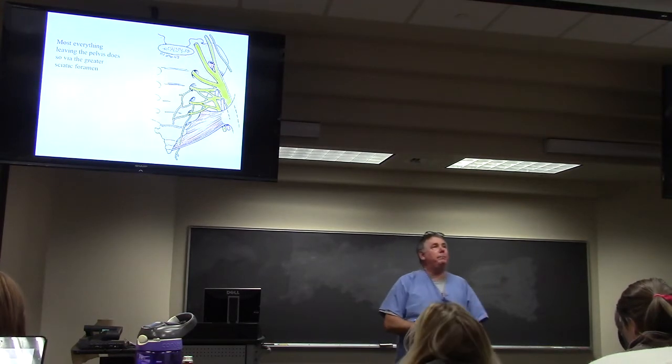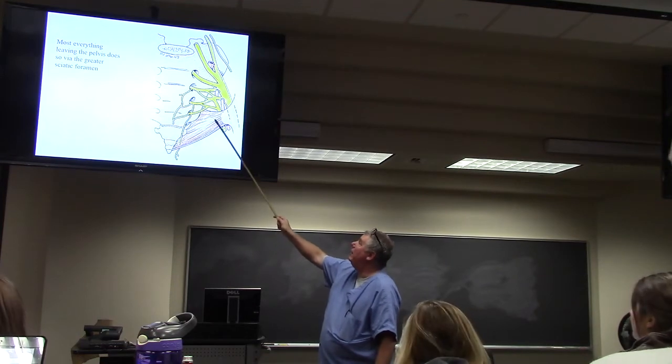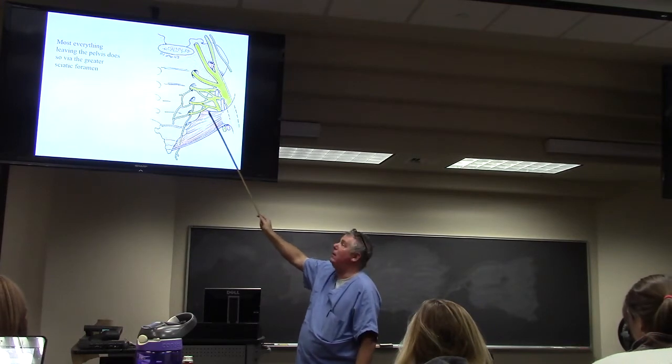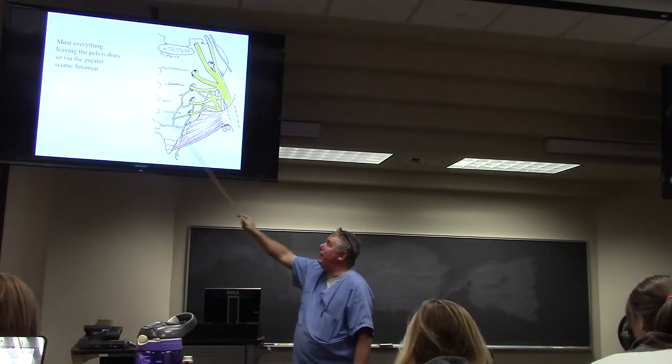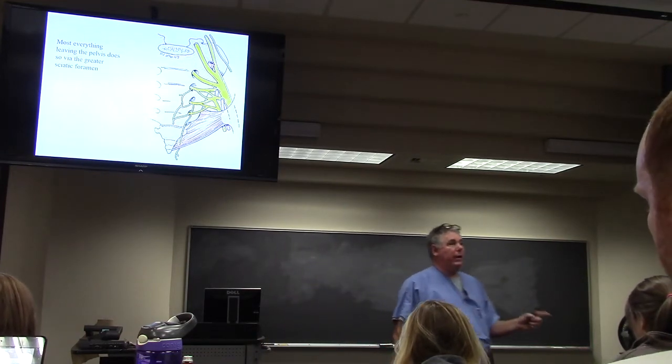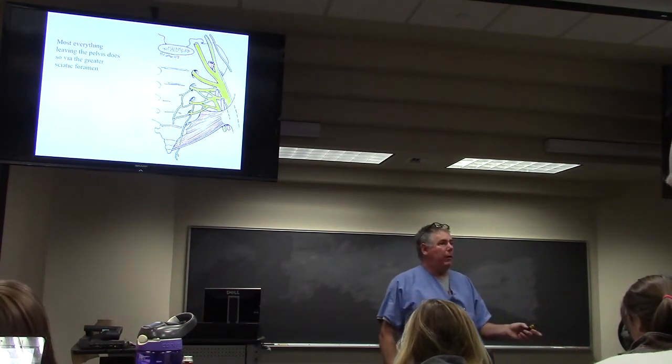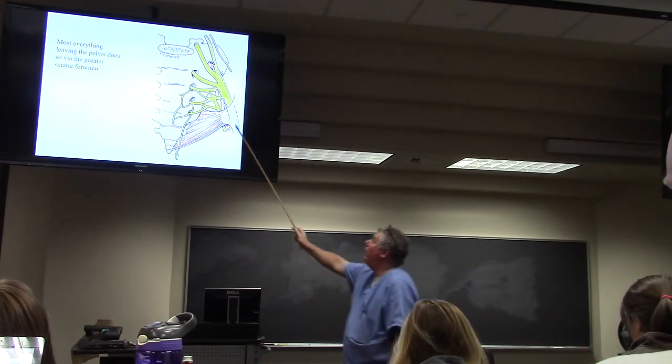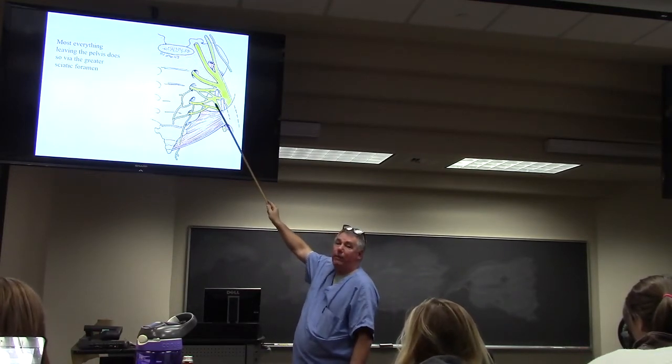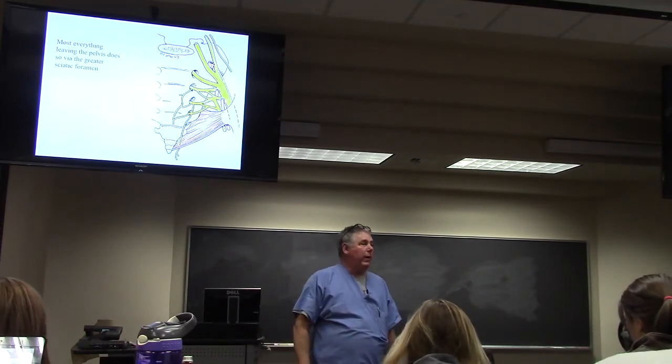Here's that sacrospinous ligament here forming the greater sciatic foramen. Most everything leaving the pelvis, except for the obturators and the pudendals, well, no, the pudendals too, just the obturator, goes through the greater sciatic foramen. The lumbosacral plexus does, and all of the vessels that are headed for your lower extremity, go through the greater sciatic foramen.